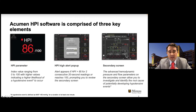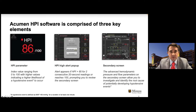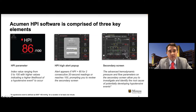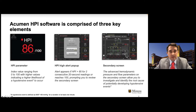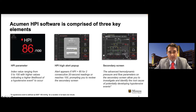What is Acumen HPI software? It's comprised of three components on the Hemisphere platform from Edwards Lifesciences, and that same platform supports cerebral oximetry, so you can put it all together on one screen. We have an HPI number — an index value from zero to 100 — where the higher the number, the higher the likelihood of a hypotensive event occurring, and also the closer to the event that may occur. A hypotensive event is defined as a MAP less than 65 for a duration greater than one minute.